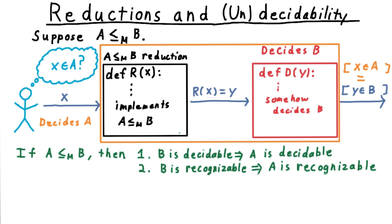Thus, the fact that A is reducible to B has four important consequences for decidability and recognizability. The easiest to see is that if B is decidable, then A is also decidable. As we've seen, we can just compose the reduction with the decider for B.